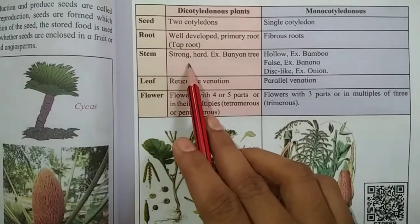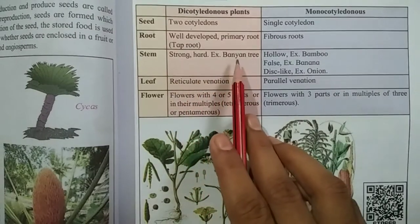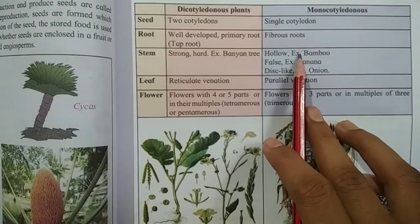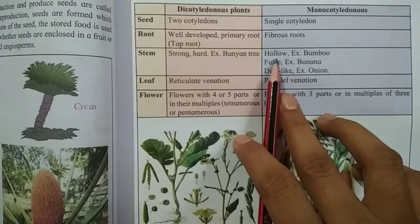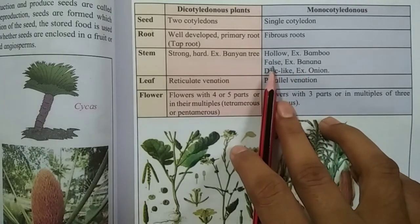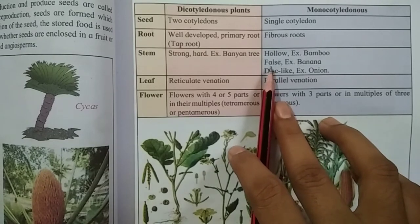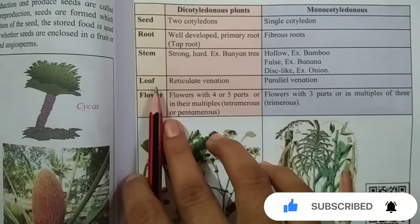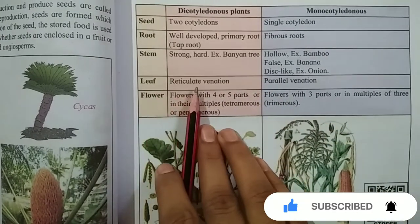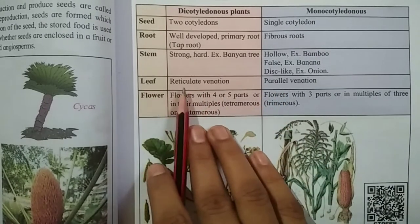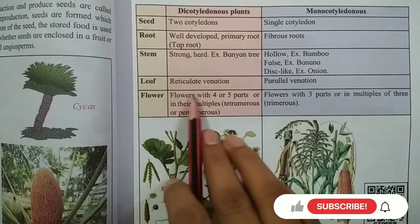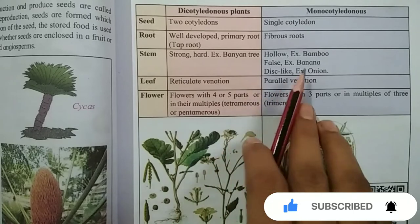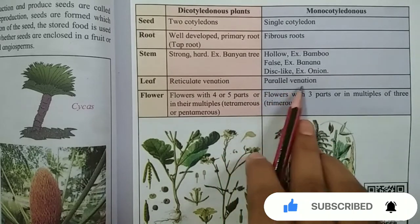Next, regarding stems: dicot stems are strong and hard — for example, the banyan tree. Monocot stems are hollow as in bamboo, or false stems as in banana tree, or disc-like as in onion. Regarding leaves: dicots have reticulate venation, whereas monocots have parallel venation.